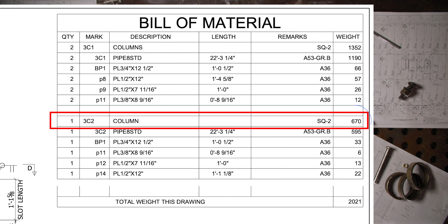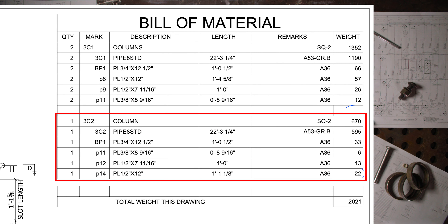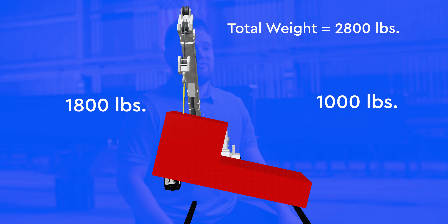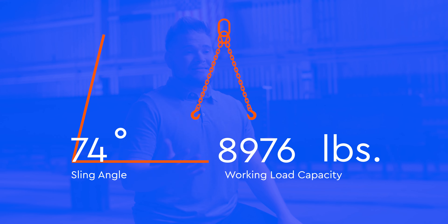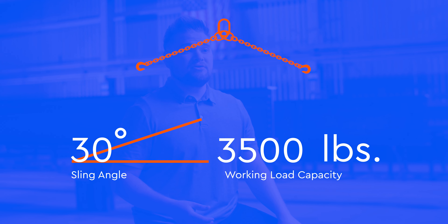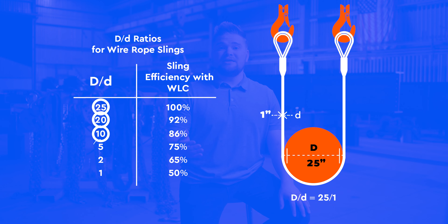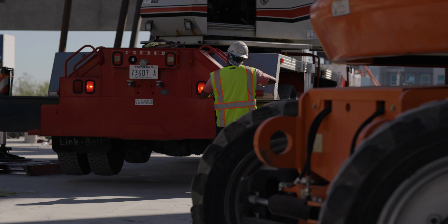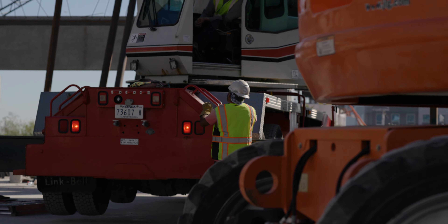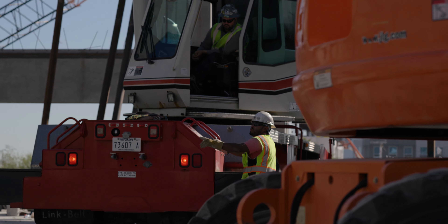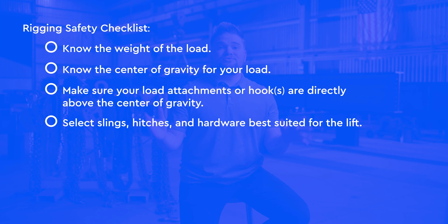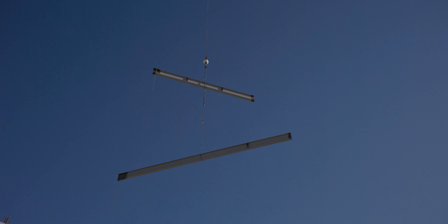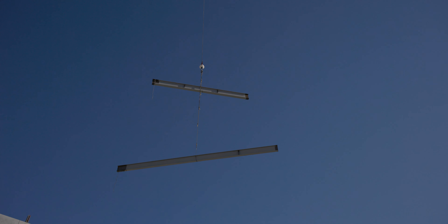We'll talk about calculating your load weight, determining center of gravity, rigging configurations, sling angles, DD ratios, pre-lift meeting and equipment inspection, the rigging safety checklist, multiple lift rigging procedures, and then we will conclude.